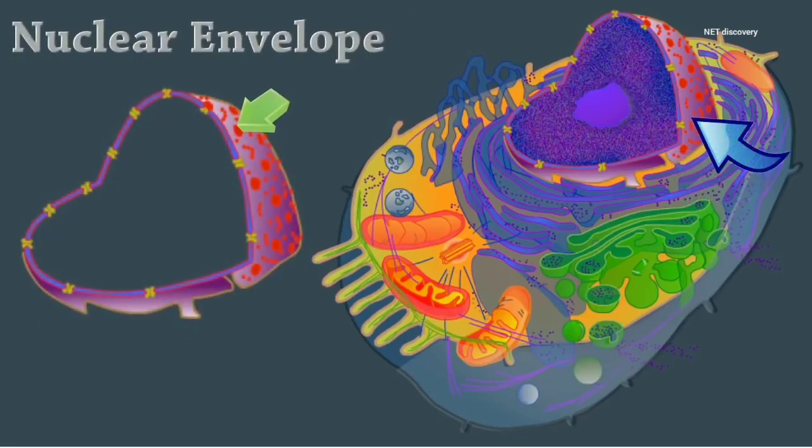The nuclear envelope is a double membrane structure that is pierced by the pores. The outer membrane is continuous with the endoplasmic reticulum.